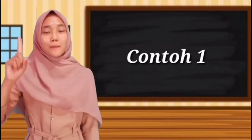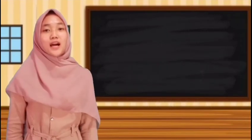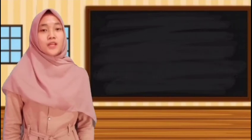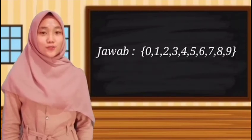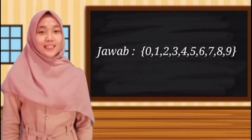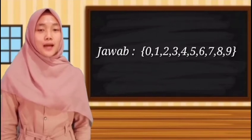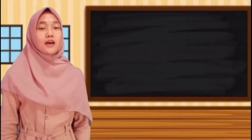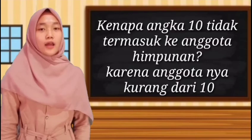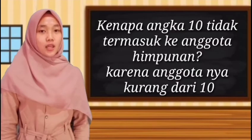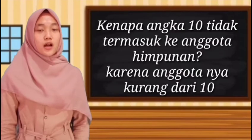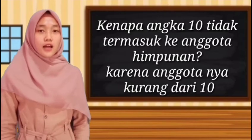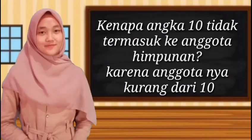Contoh yang pertama yaitu bilangan cacah kurang dari 10, yaitu 0, 1, 2, 3, 4, 5, 6, 7, 8, 9. Kenapa angka 10 tidak termasuk anggota himpunan? Karena anggotanya kurang dari 10.